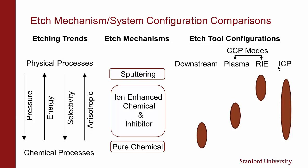Here I talk about etch mechanism trends. Going to lower pressure gives more physical etching; higher pressure gives more chemical etching. Typically, to get the best results, if we can get some chemistry and the synergistic interaction between chemistry and ion bombardment, then we get the highest rates and the most control over profile. This shows the tradeoff between different tools: the downstream plasma mode is really talking about pure chemical processes; the CCP-RIE tends to be very ion-driven with high ion energies; the plasma mode for lower ion energies; and the ICP gives high rates and a wide range of ion energies.